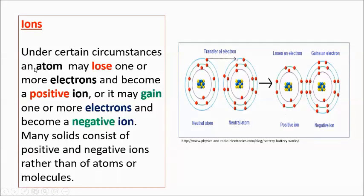Under certain circumstances, an atom may lose one or more electrons. Metals in particular donate electrons, so losing electrons causes metals to become positive ions, like sodium ion. An atom may also gain one or more electrons and become a negative ion. Usually electron receivers are non-metals, like chlorine, so after receiving an electron from sodium, chlorine becomes a negative ion.